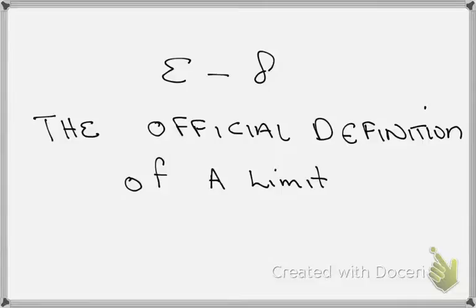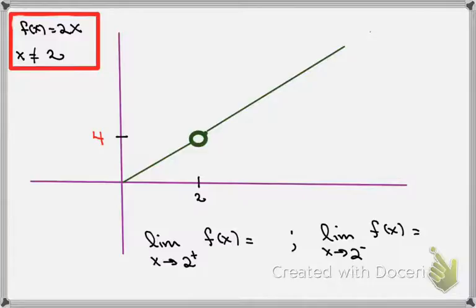In this video I want to talk about a very important definition related to limits — it's called the epsilon-delta definition of a limit. Let's consider a simple function f of x is equal to 2x, everywhere except when x is equal to 2, so there's a hole there. If that hole were plugged, the functional value at 2 would be 4.